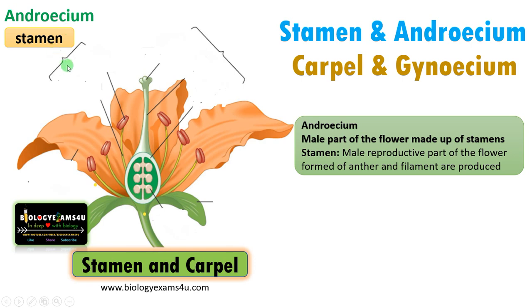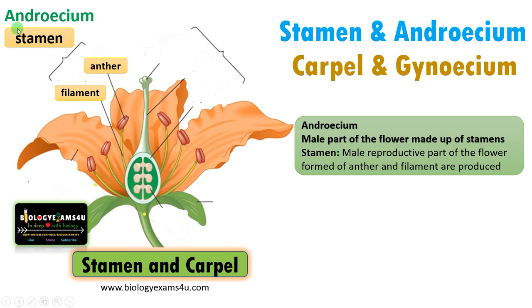Stamen is a male reproductive part of the flower that is made up of an anther and a filament. Androecium is the third whorl of the flower made up of the basic unit called stamen. Stamens together form the third whorl called androecium.